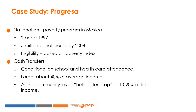PROGRESSA was a national anti-poverty program in Mexico that started in 1997, which had about 5 million beneficiaries by 2004. Eligibility was based on a poverty index. The program consisted of cash transfers conditional on school attendance and health care check-ups for children and pregnant women. The transfer was fairly large, representing about 40% of average income for each household. At the community level, this represented a huge helicopter drop of about 10–20% of local income.